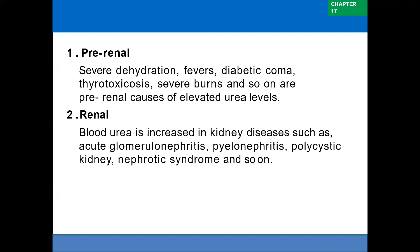The second category is renal causes, where blood urea is increased in kidney diseases such as acute glomerulonephritis, pyelonephritis, polycystic kidney disease, and nephrotic syndrome. The third category is post-renal causes, where there is an obstruction to urine flow due to impacted stones, tumours, stricture of the urethra, or enlargement of the prostate.